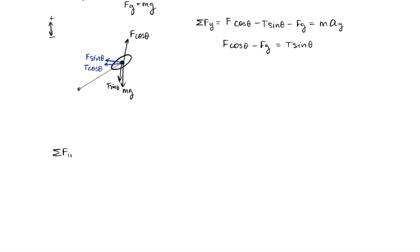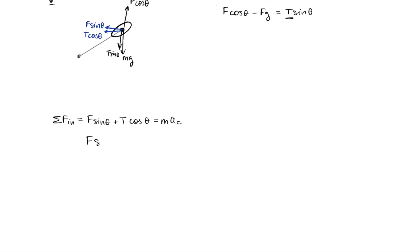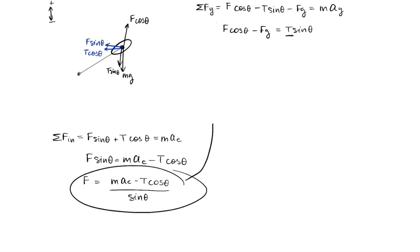Here we can sum our forces in the n direction, which equals F sine theta plus T cosine theta, equaling mass times centripetal acceleration. Since we're looking for the T value, we should substitute a value for F to eliminate that variable. Getting F by itself: F sine of theta equals mass times centripetal acceleration minus T cosine theta, so F equals mass times centripetal acceleration minus T cosine theta, all over sine theta.